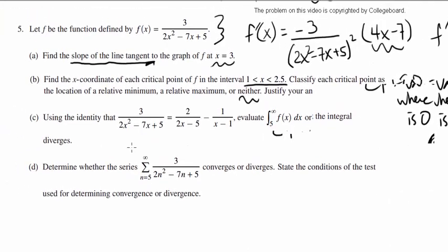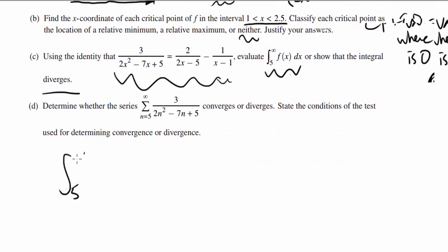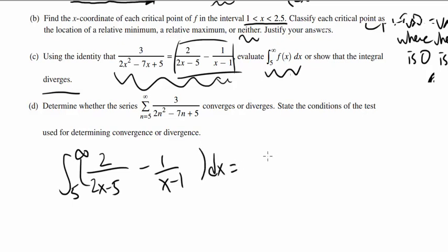Now let's go on to part C. Using the identity they give us, the partial fraction decomposition, we don't have to actually do it, which is very nice. They want us to evaluate the improper integral from 5 to infinity of f(x) dx, or show that the integral diverges. We want to evaluate it from 5 to infinity, and our f(x) is this. They broke it down for us: 2 over (2x - 5) minus 1 over (x - 1) dx. We take the limit as the upper bound approaches infinity of integral from 5 to b of the same thing.